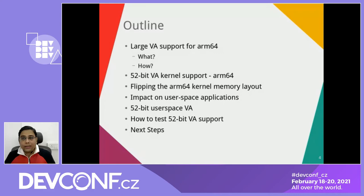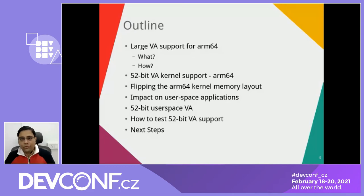Then we'll talk about what happens to user space — specifically what happens to existing user space applications which expect pointers from the existing 48-bit address range from the kernel, and how they keep on working. We'll also discuss user space applications that were broken after these kernel map changes, and how a user space application can explicitly request addresses from the 52-bit kernel range. Later, I'll talk about how to test VA support, especially if you don't have real ARM64 hardware, and at the very end I'll share some suggestions and next steps.